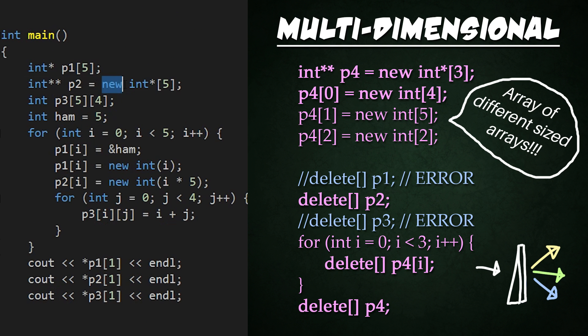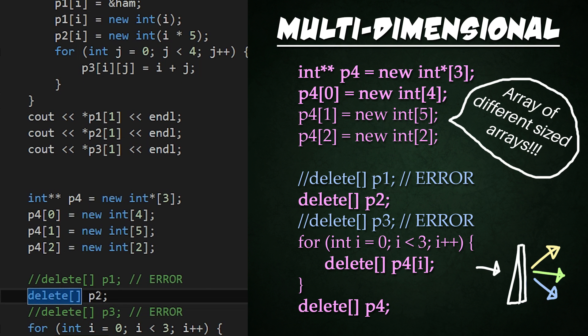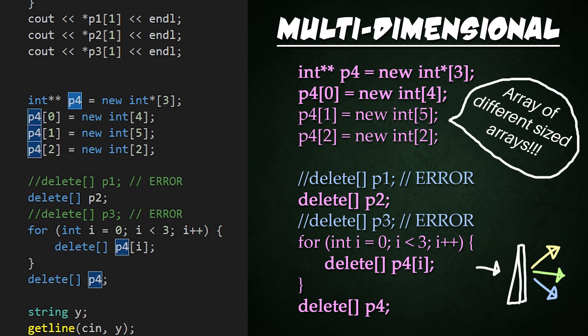P2 does need to be deallocated because again, anytime you see that keyword new, you need to have delete following somewhere and later in the program to free up that memory. Finally, P4, the reason I showed you P4 is because it's an array of pointers that points to even more arrays. So there's multiple layers of arrays that are going on and they're all dynamic. So for each one of those arrays within P4, we need to access that item and then delete the arrays within that one. And then finally, we can release the original arrays that were dynamically allocated. And then our program will be good.